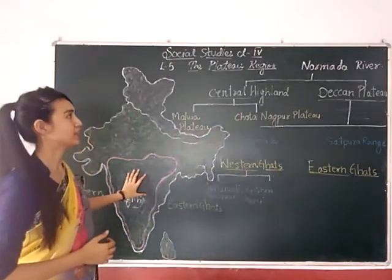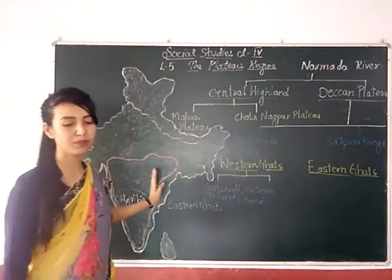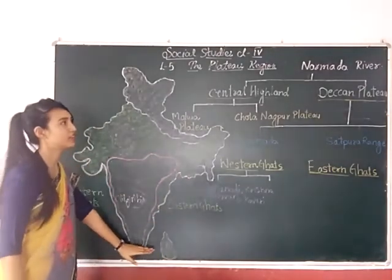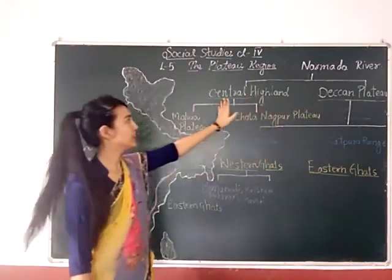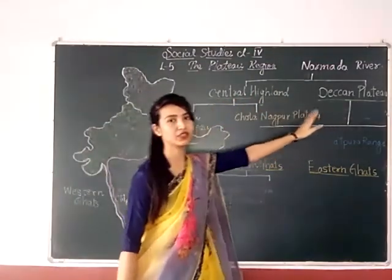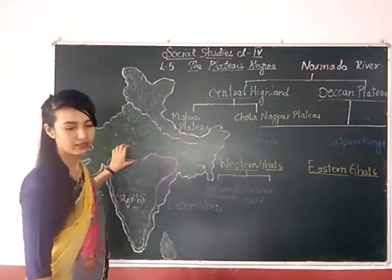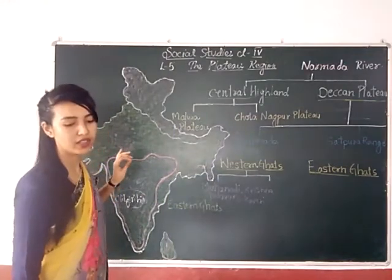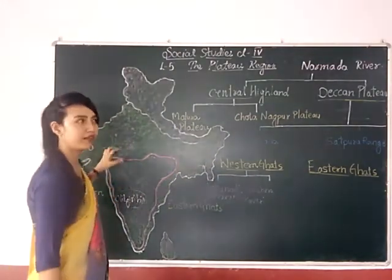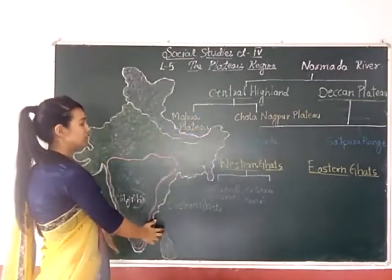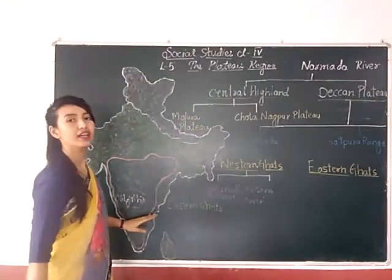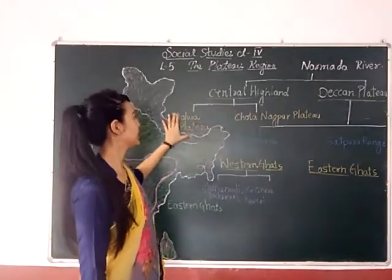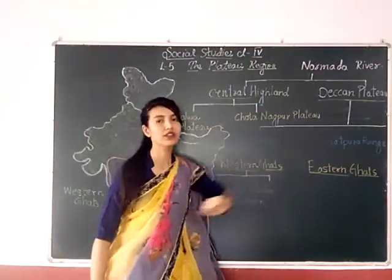The Narmada River divides the plateau into two parts — the Central Highland and the Deccan Plateau. North of the Narmada, we can see the Central Highland, and on the south side we can see the Deccan Plateau. In the Central Highland, we can see the Malwa Plateau and the Chota Nagpur Plateau.